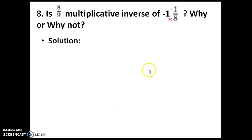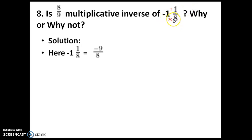This is in mixed fraction, so you have to convert it to a proper fraction. What you do is: this number multiplied by this number — 8 into 1 gives 8, plus 1 gives 9. Since the minus sign is already there, you write minus 9 by 8.